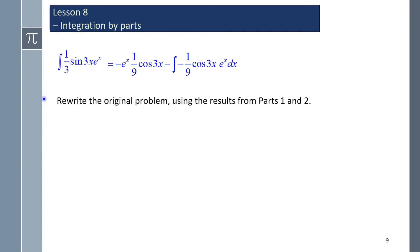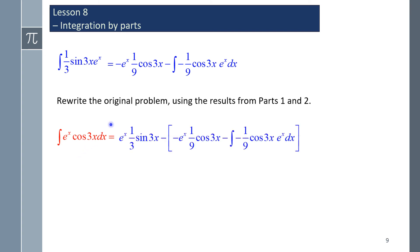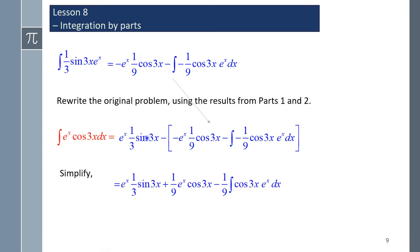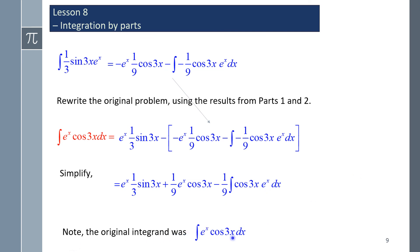Rewrite the original problem using results from parts 1 and 2. There was our original integrand — uv minus the integral of (1/3)sin(3x)·eˣ, which we now substitute in. Simplifying, a double negative becomes a plus, and we have minus the integral of (1/9)cos(3x)·eˣ. Note that the negative sign gives us minus (1/9) times the integral of cos(3x)·eˣ. Importantly, the original integrand eˣ·cos(3x) appears again on the right-hand side.